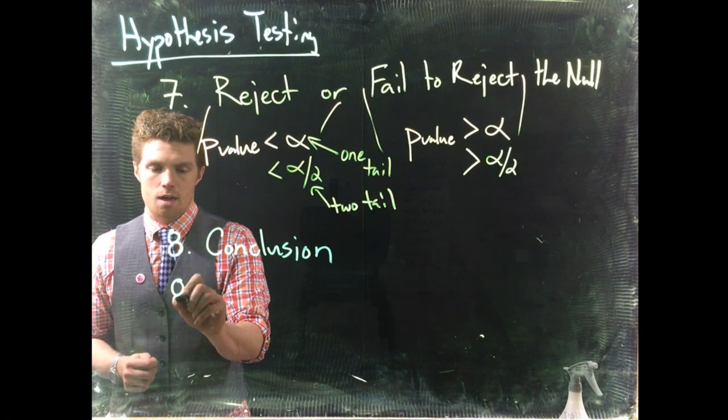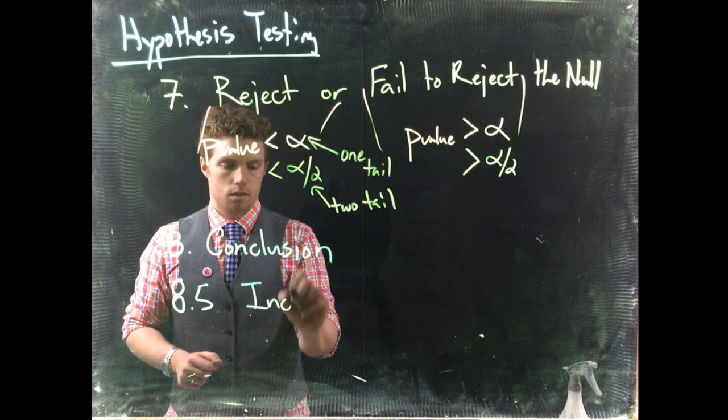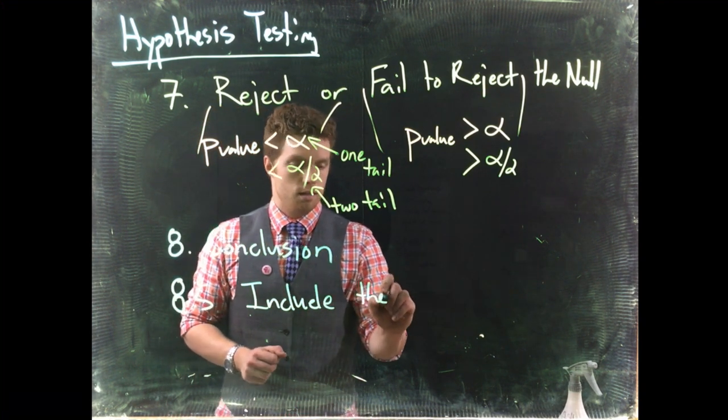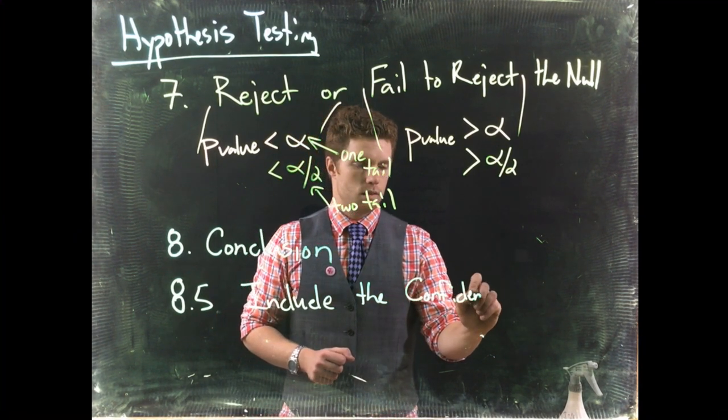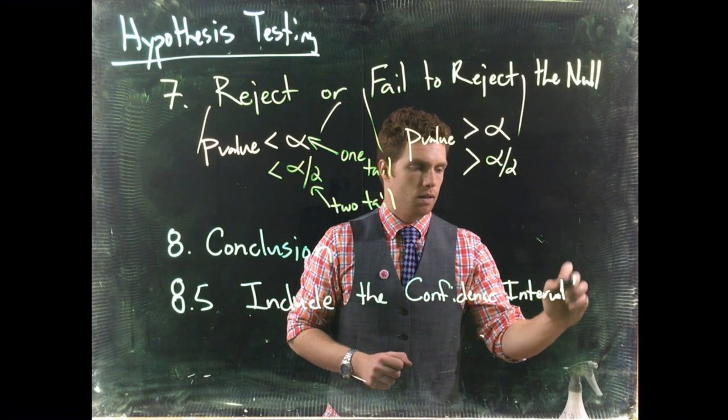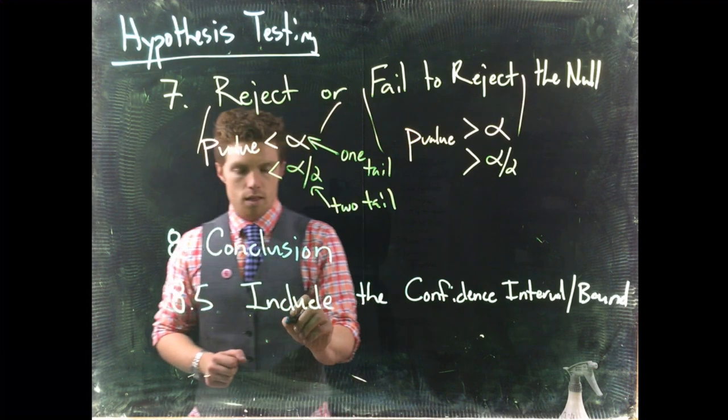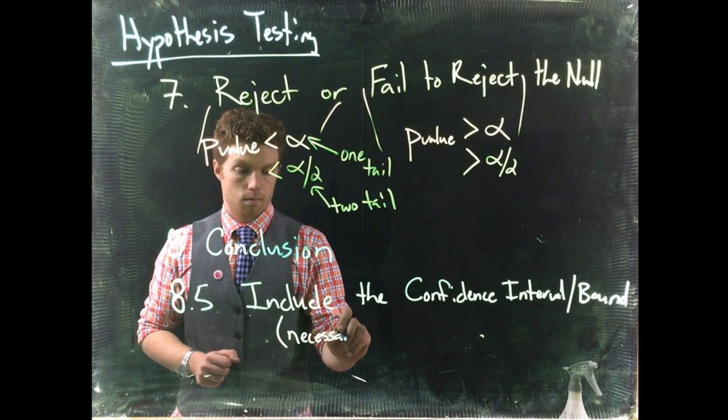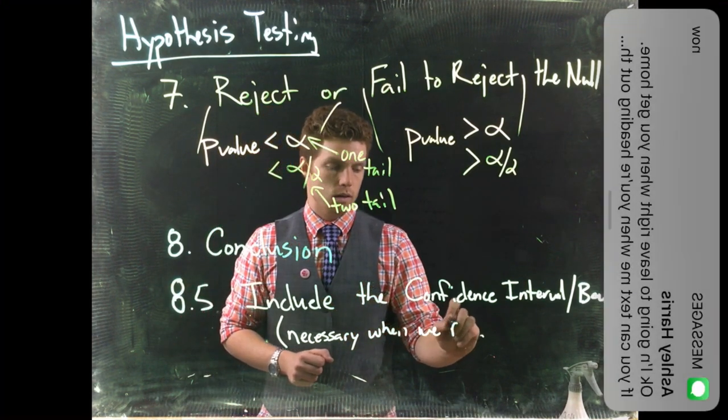So I kind of call this like 8.5 and this is we need to include the confidence interval slash bound. And this is only necessary when we reject.